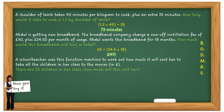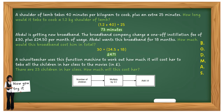A school teacher uses a function machine to work out how much it will cost her to take all the children in her class to the movies. There are 23 children — pause the video and have a go. It's simply 23 multiplied by 4.5, then add 10. Look how simple that answer is — this is the type of working that gets you full marks. Let your numbers talk.